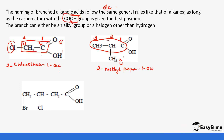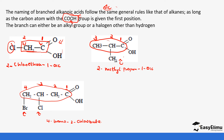Then we look at the next example. The longest chain — we start numbering from here: one, two, three, four. We have a chloro at carbon number three and a bromo at carbon number four. Bromo comes first alphabetically, so it becomes 4-bromo-3-chlorobutane-1-oic acid, because there are four carbons.